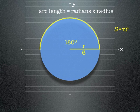Now in this case, radius is equal to 6 units, so s is equal to pi 6, or we would write it as 6 pi.